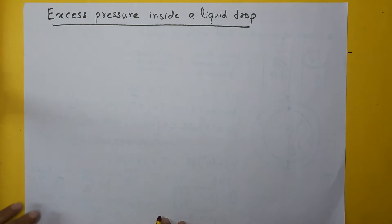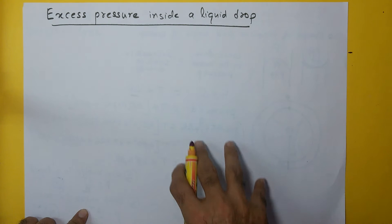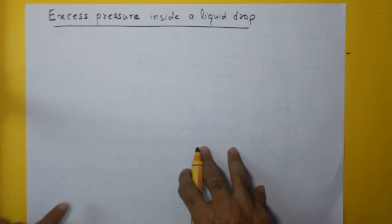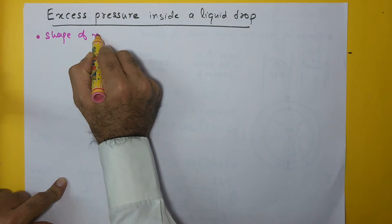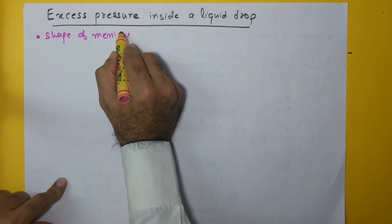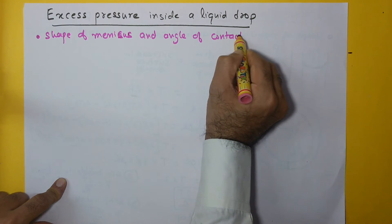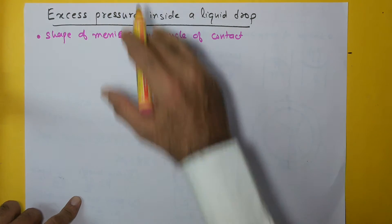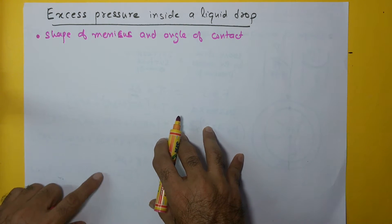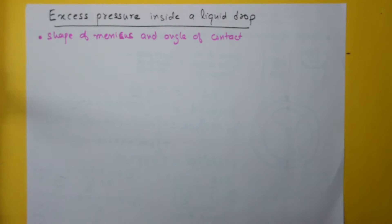One more application of surface tension: excess pressure inside a liquid drop. Before we get into the details and arrive at an equation for the excess pressure, I would strongly recommend that you watch a video on the shape of meniscus, angle of contact. I would strongly recommend you go through that video before watching this one, because there are some concepts explained there in detail which will help you understand this in a much better way.